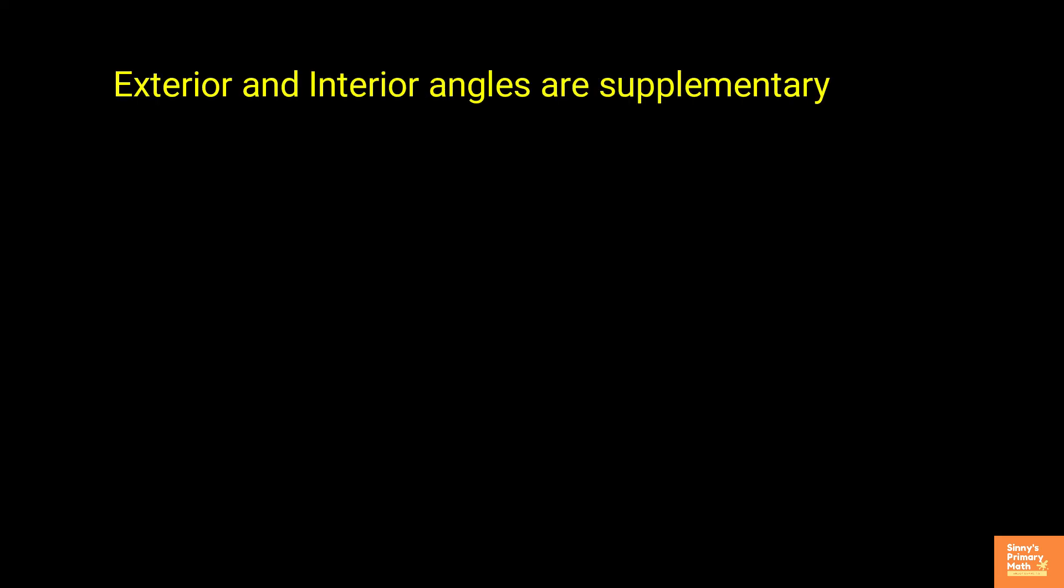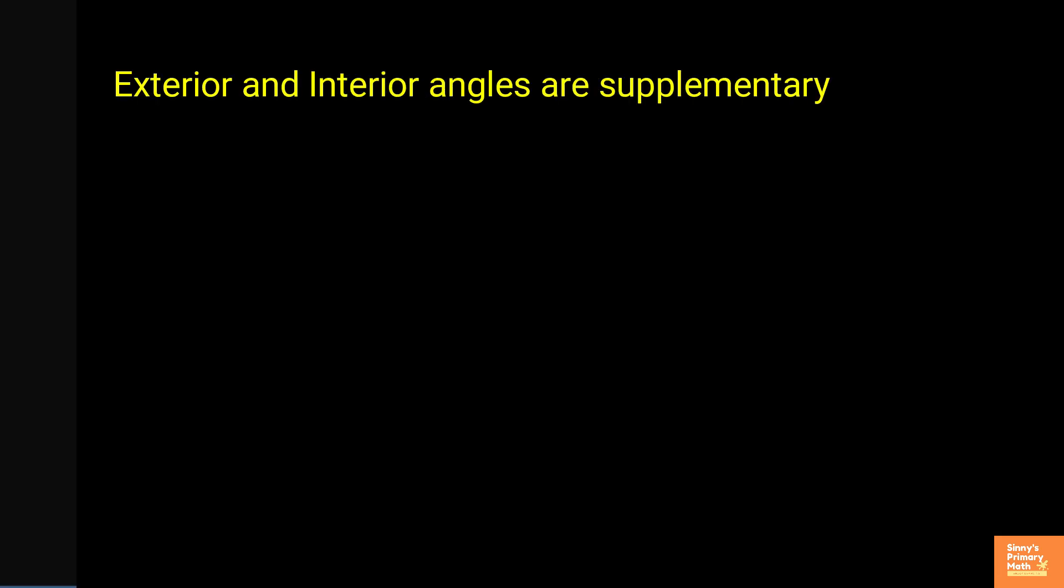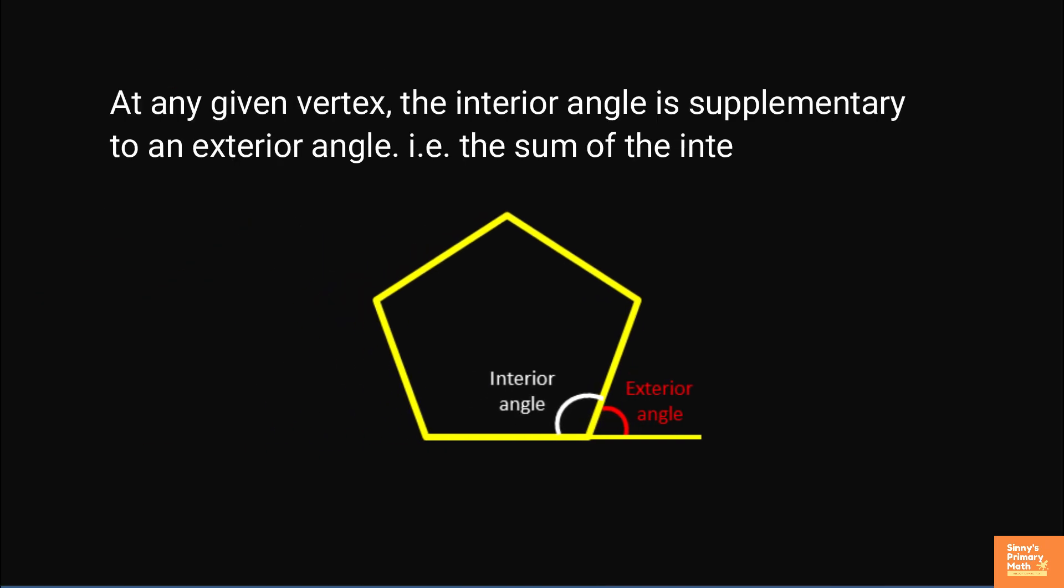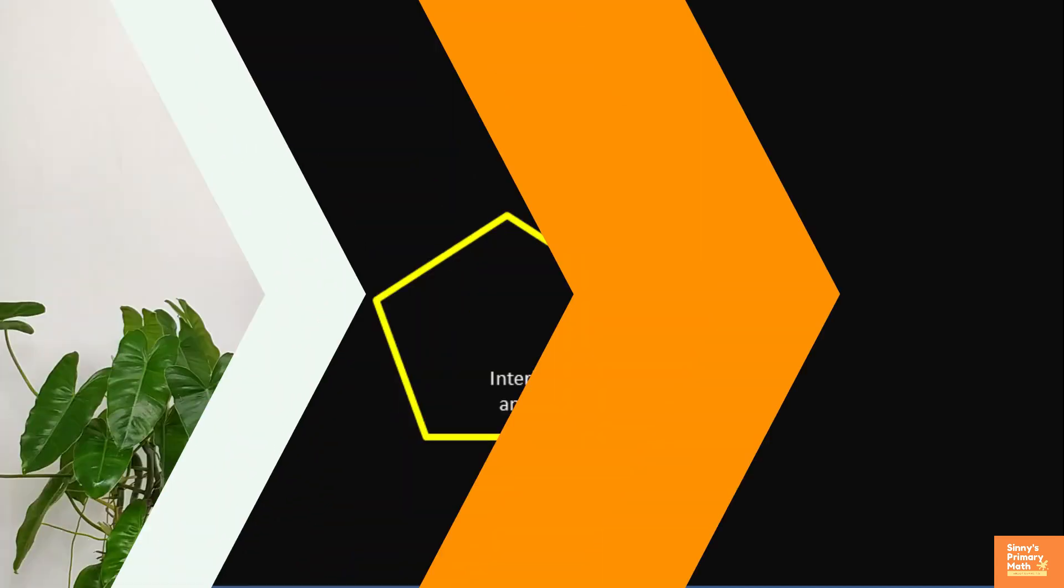Exterior and interior angles are supplementary at any given vertex. The interior angle is supplementary to an exterior angle, that is, the sum of the internal angle and the external angle on the same vertex is 180 degrees. Hope you are now familiar with the properties of polygons.